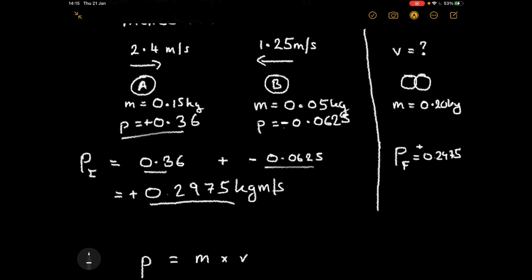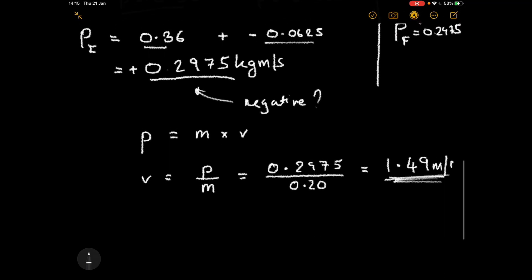If after doing our calculation we had a negative number for the final momentum, that means the combination of objects afterwards is moving in the other direction. The negative sign keeps track of which direction things are going, but otherwise it's exactly the same type of problem.